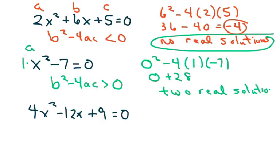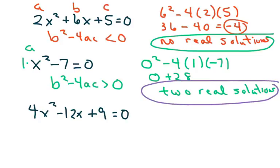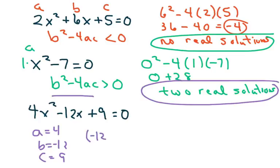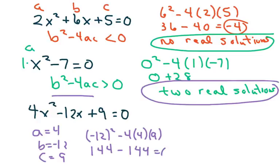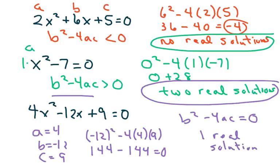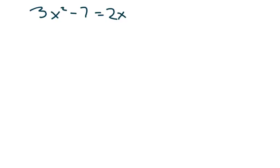For the last standard form example, a is 4, b is negative 12, and c is 9. We compute b² minus 4ac: negative 12 squared minus 4 times 4 times 9, which is 144 minus 144. This equals 0, so b² minus 4ac is 0, meaning we have one real solution.